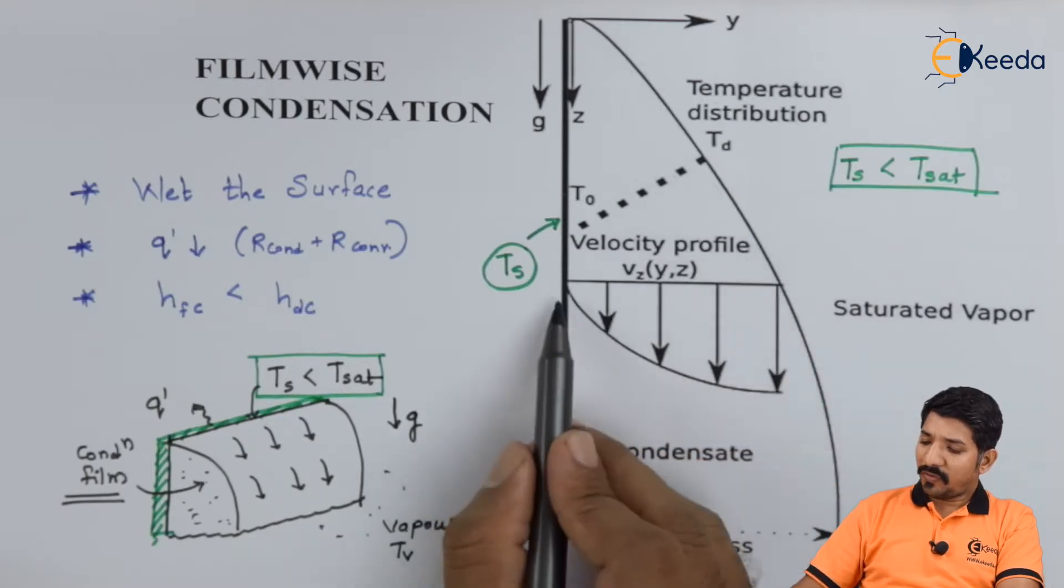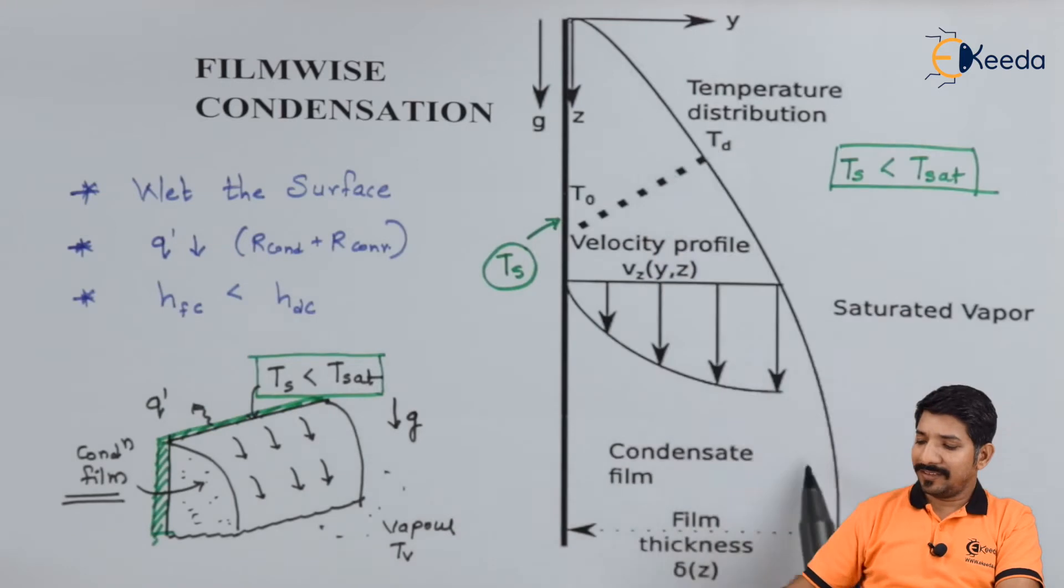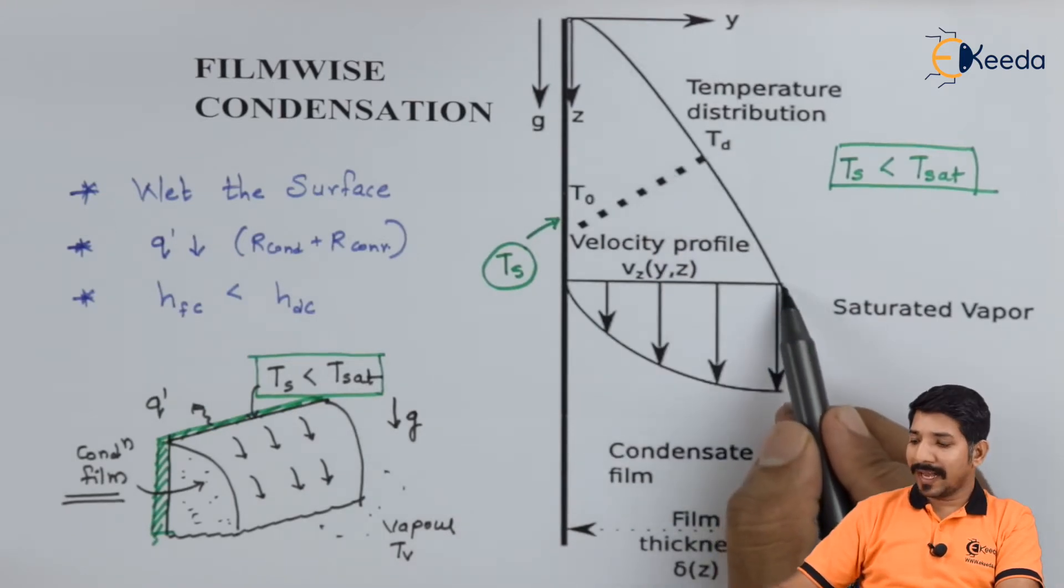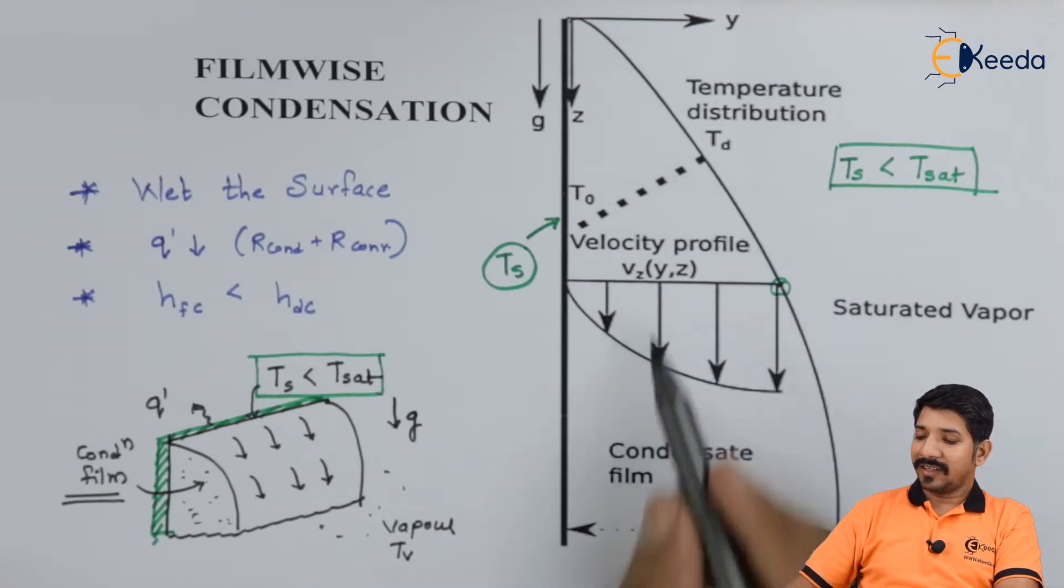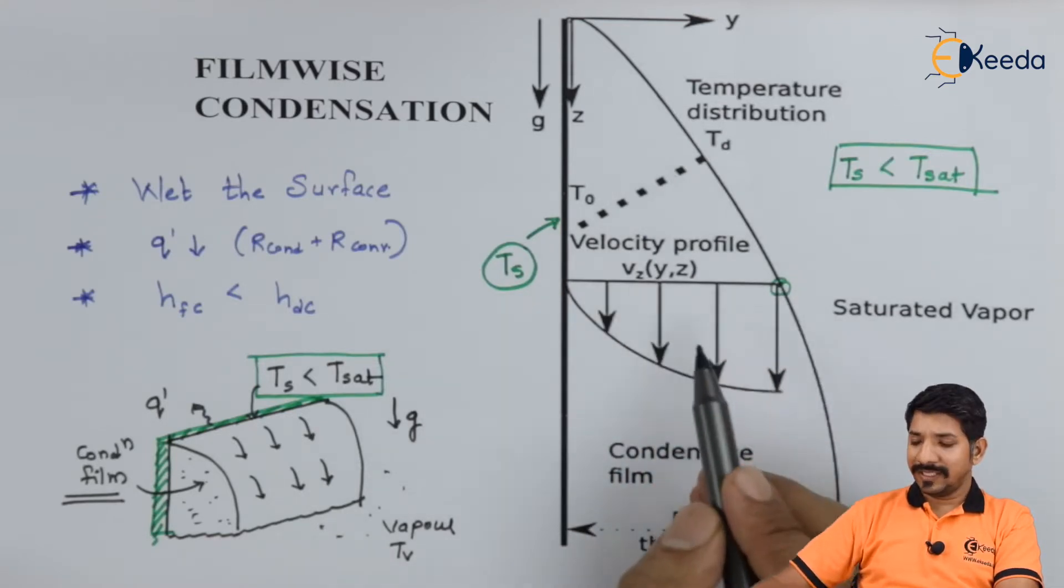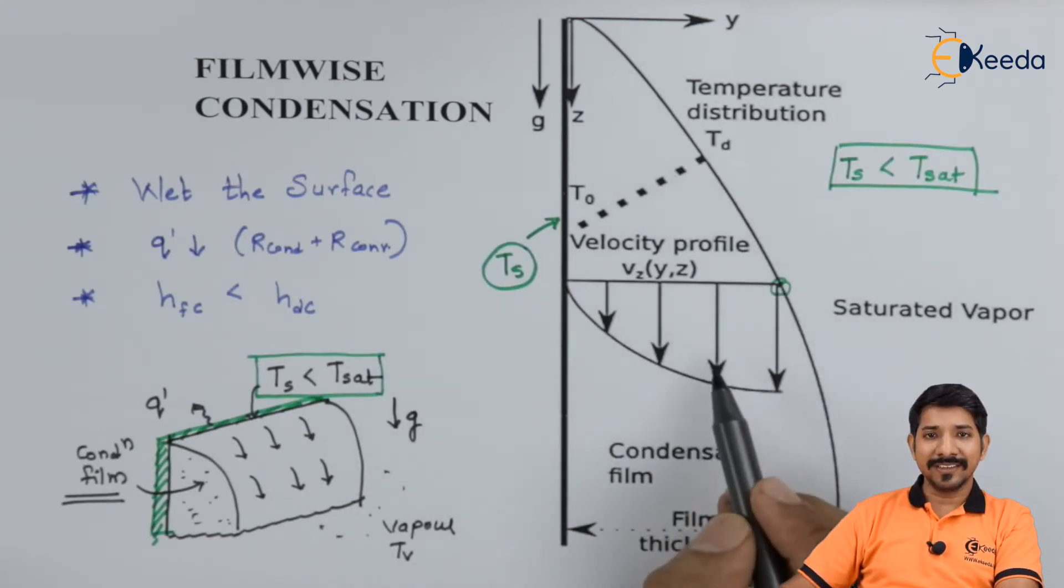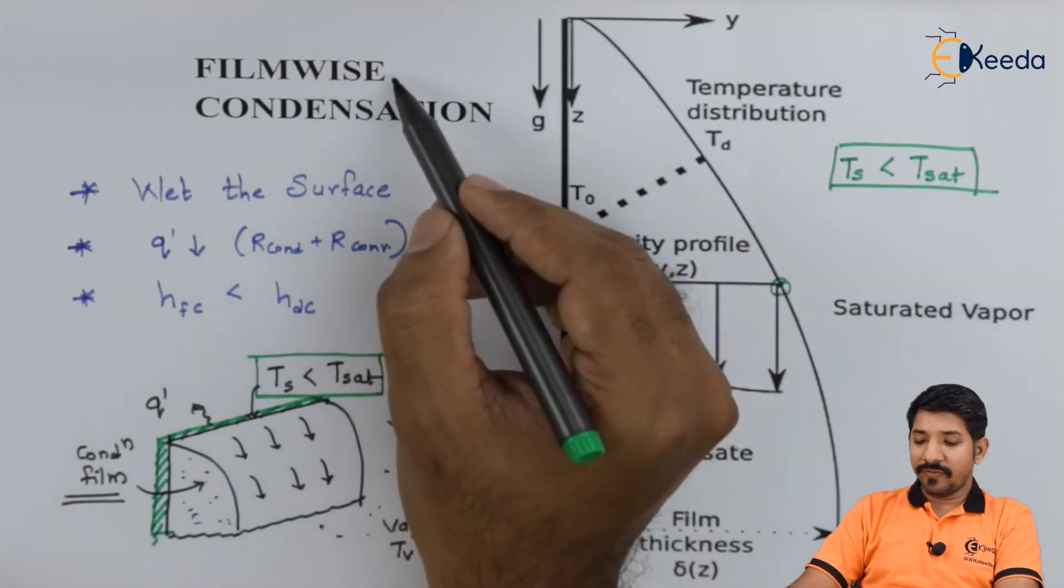Here the velocity profile may look something like this, where at the end the velocity is highest because at this point the shear is continuous, and the thickness is called delta Z. This arrangement is necessary for derivation, which we are not going to consider in this topic. We are going to consider the salient features of filmwise condensation.